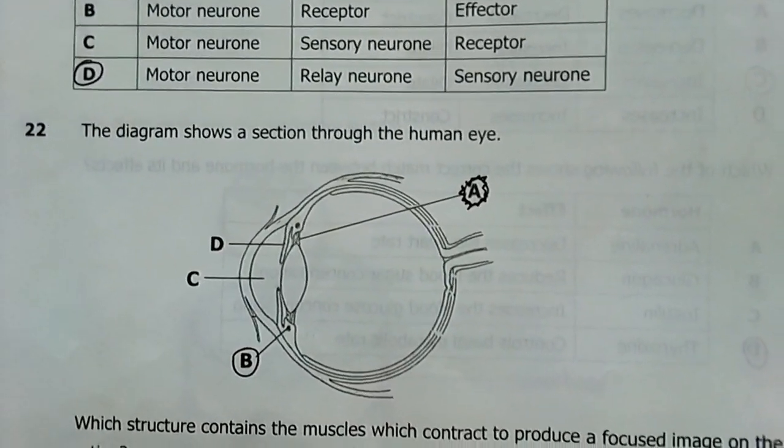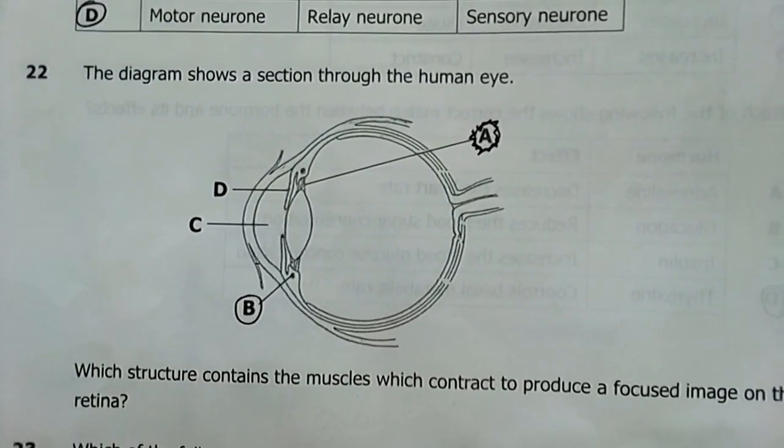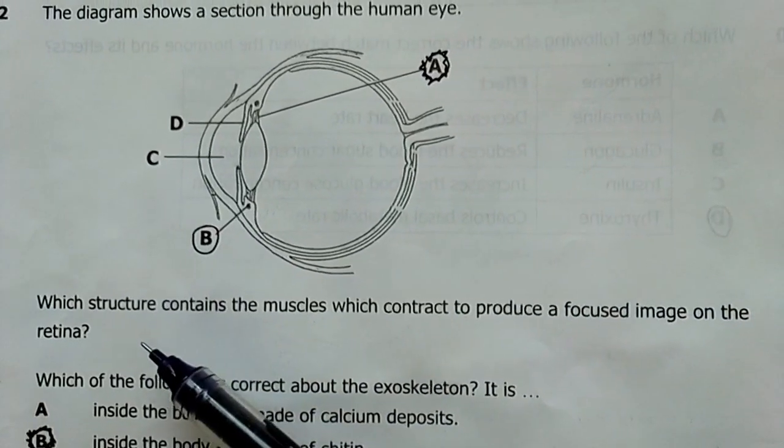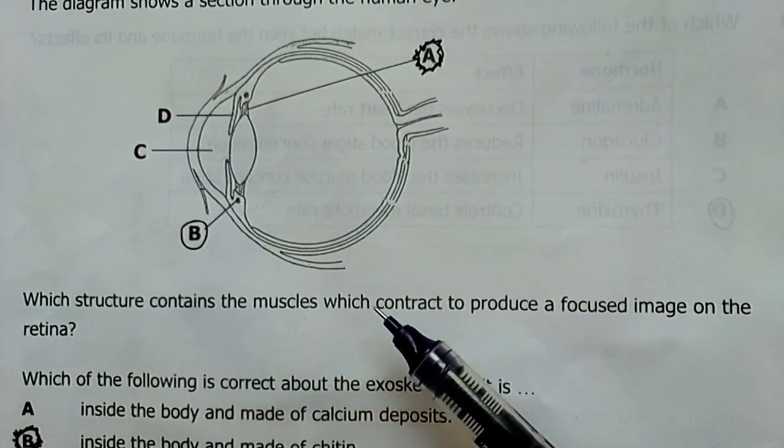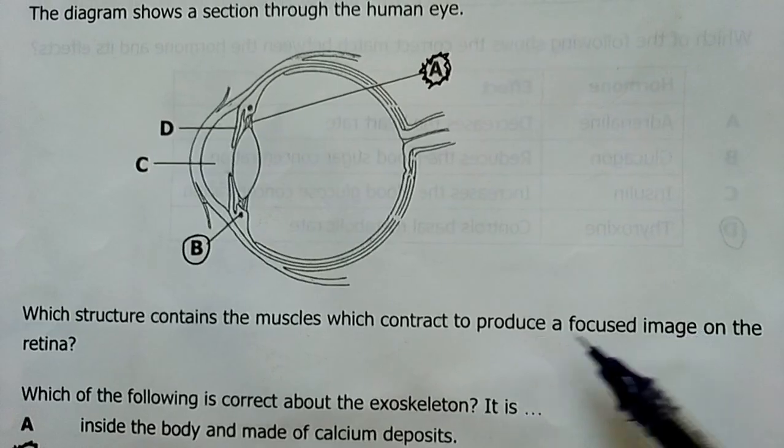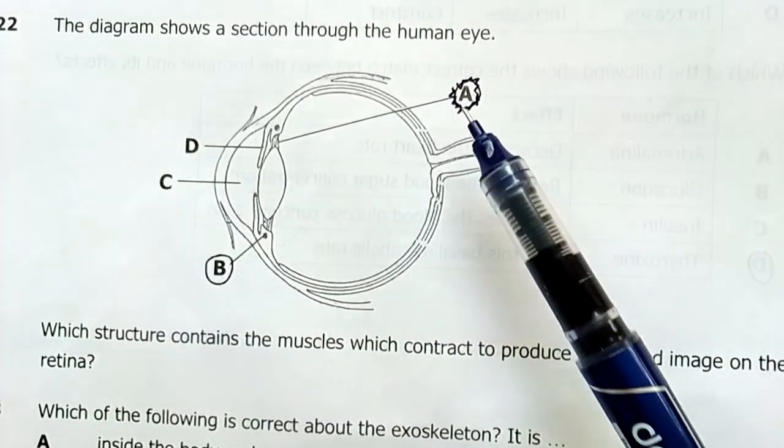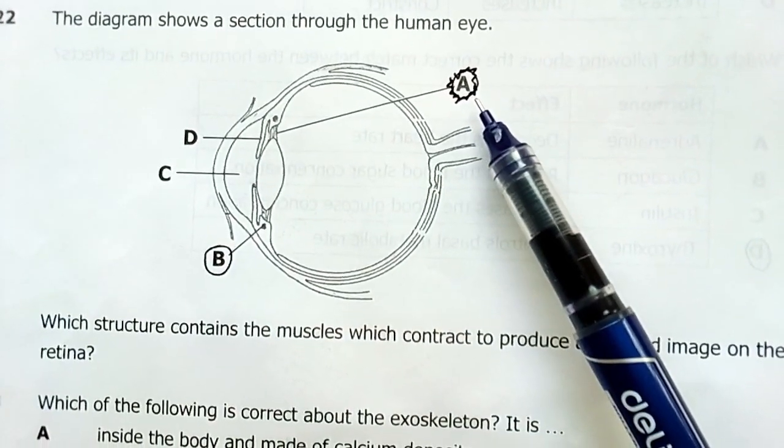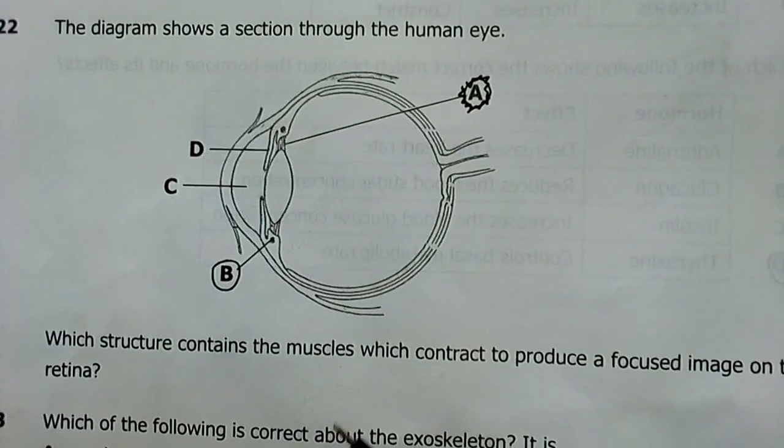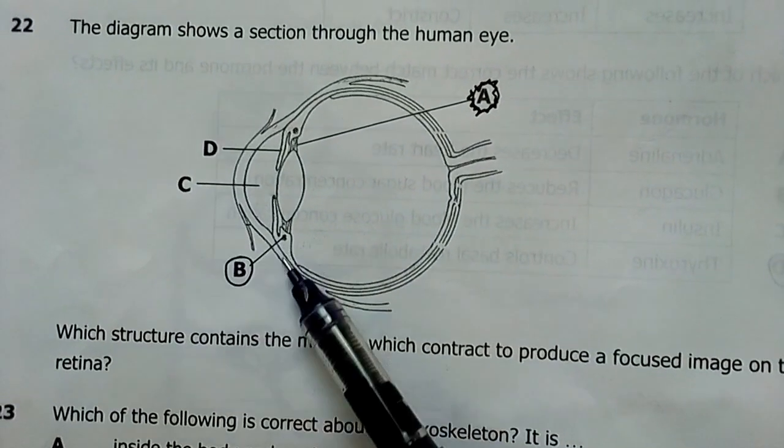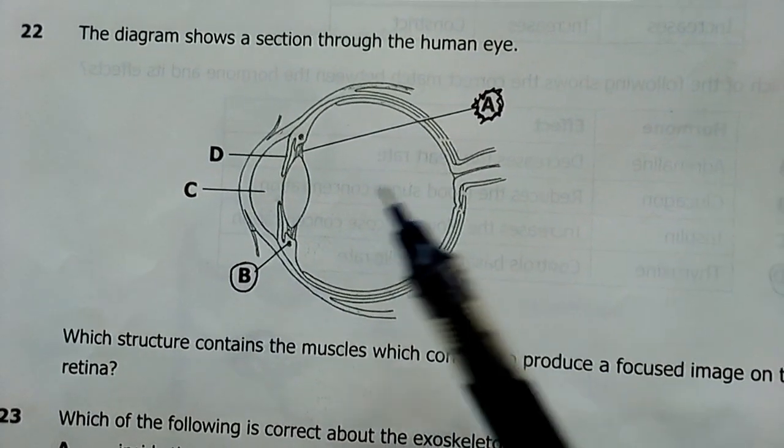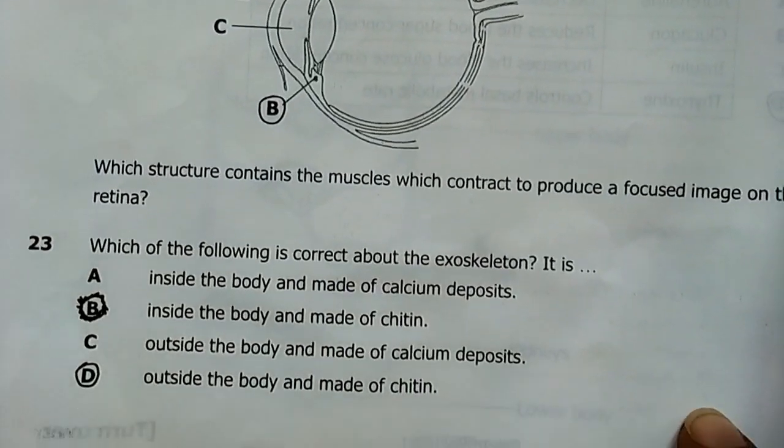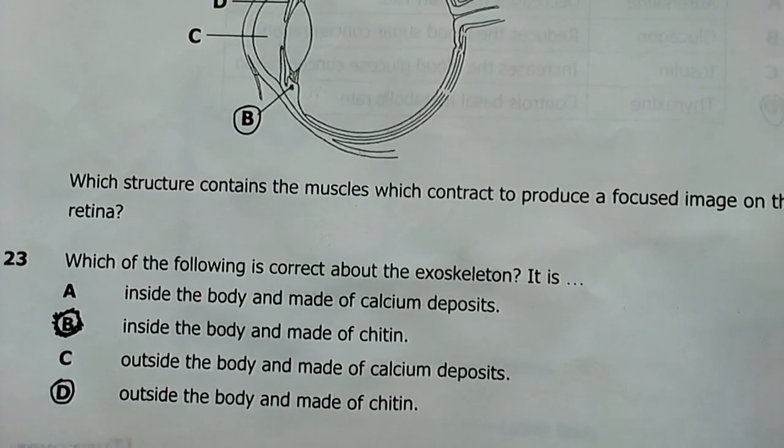Question 22, the diagram below shows the section through the human eye. Which structure contains the muscles which contract to produce a focused image on the retina? I was almost going for the suspensory ligaments, but my answer is actually B. Ciliary muscles.